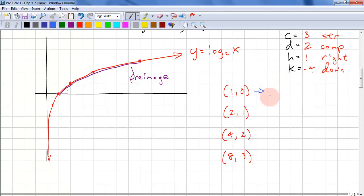This becomes 1/2 plus 1, 3 times 0 minus 4, and that's 3/2 minus 4. This one is 2 over 2 plus 1, 3 times 1 minus 4. That simplifies to (2, negative 1).